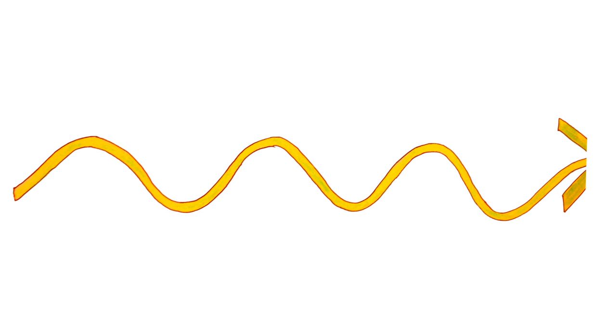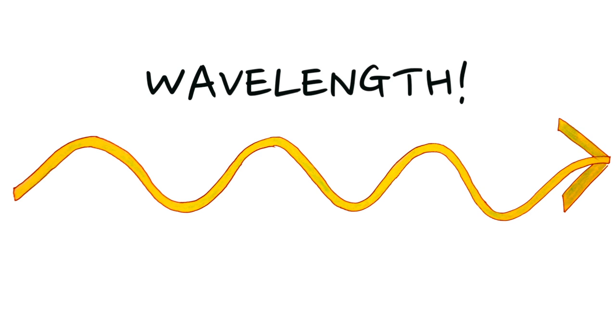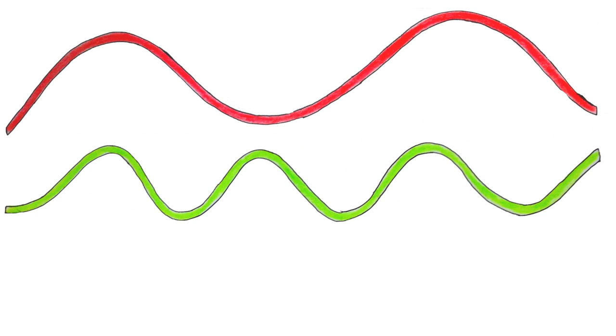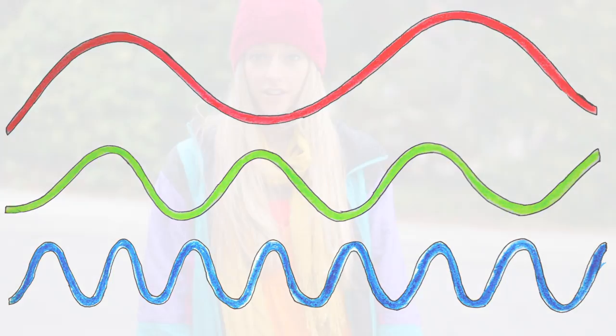Light is a wave that travels through space, and like any wave, it has what's called a wavelength — that's just the length from one peak to the next peak. Different colors are simply different wavelengths of light. For example, red has a longer wavelength than green, which has a longer wavelength than blue. So let's take a look at your wavelength.